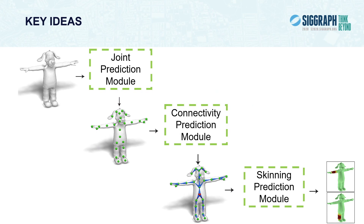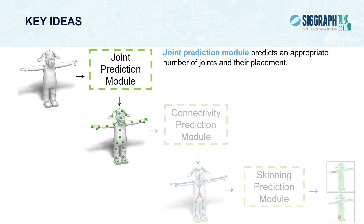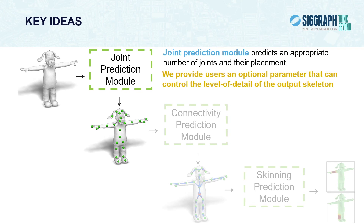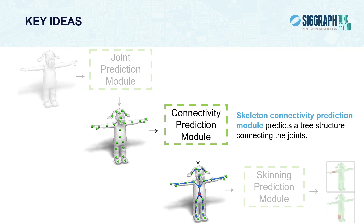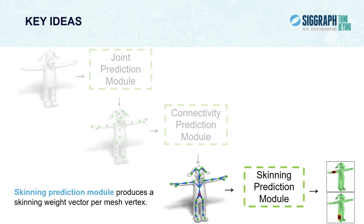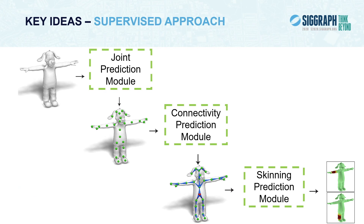To address the above challenges, we propose a deep learning architecture with three stages. We first apply a skeletal joint prediction module, trained to predict the appropriate number of joints and their placement, to capture the articulated mobility of the input character. We provide users an optional parameter to control the level of detail of the output skeleton. Second, we apply a skeleton connectivity module to predict a hierarchical tree structure connecting the joints. Finally, we apply a skinning prediction module to produce skinning weights. All modules are trained in a supervised manner from character rigs mined online.